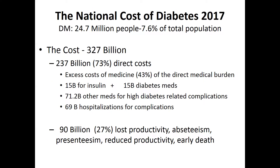The macroscopic cost of diabetes: for the 24.7 million people who have it, the cost is $327 billion. $237 billion, or 73%, are direct costs, and $90 billion, or 27%, are lost productivity. Of that, there's $15 billion for insulin, $15 billion for diabetes medicines, $71 billion for other medications such as hypertension and complications, and nearly $70 billion for hospitalizations for complications.